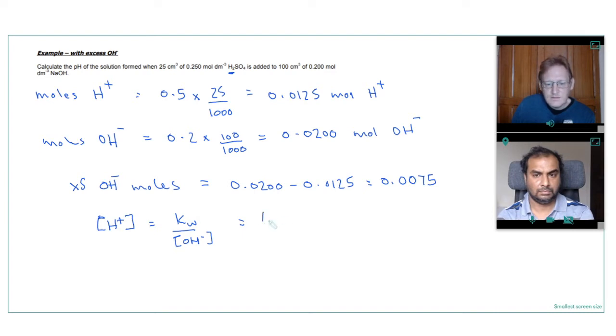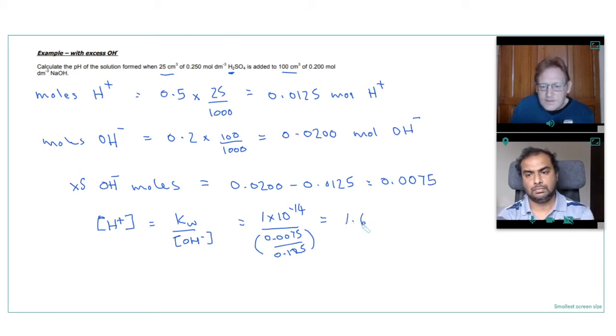So our H plus is KW over OH minus. KW is a constant under standard conditions. That's 1 times 10 to the minus 14. And our hydroxide ion, and this is concentration. So we'll have to do 0.0075 moles divided by the volume. This is in a volume of 125 centimeters cubed. Because we have 25 to 100 centimeters cubed. And so 125 divided by 1,000 is 0.125.